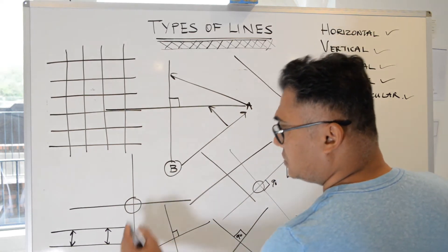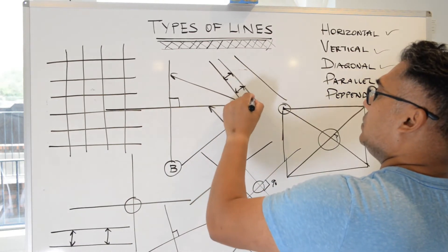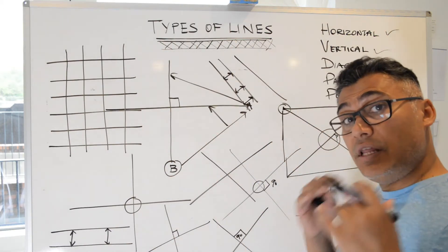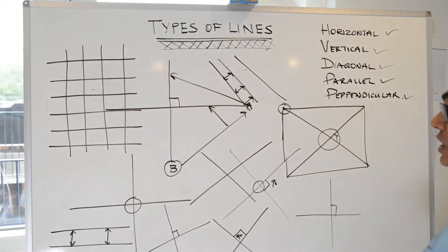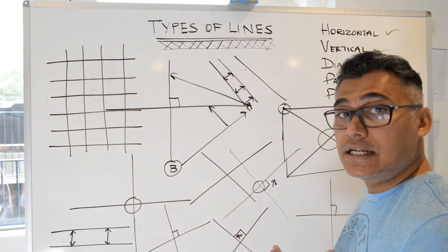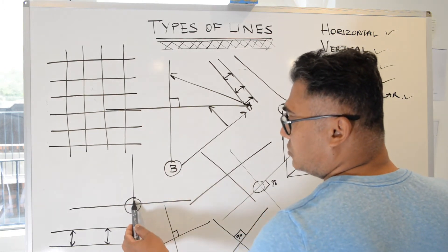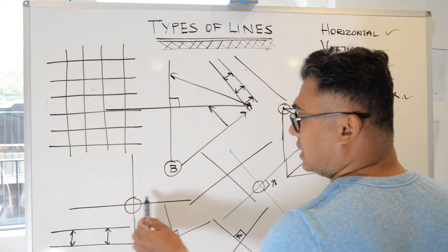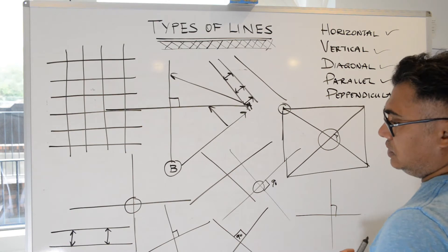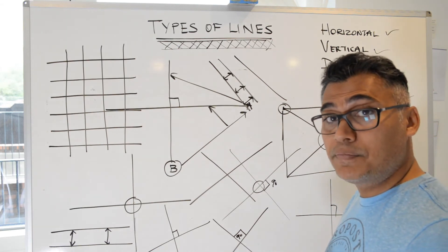Whether you have a line at this gradient or that, the distance always remains the same between them — they are equidistant and they never meet. Those lines could carry on for infinity and never meet. And last but not least, perpendicular lines: lines that intersect at 90 degrees. Whether it's this example or that example, if it is not 90 degrees then they are not perpendicular.